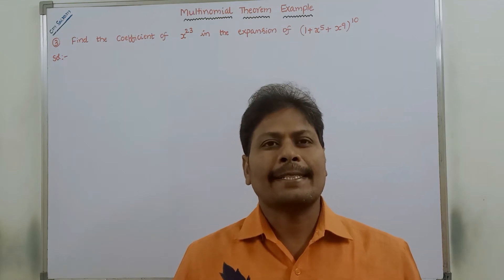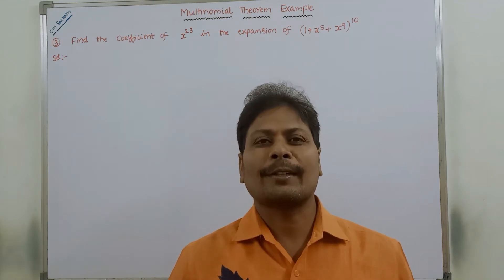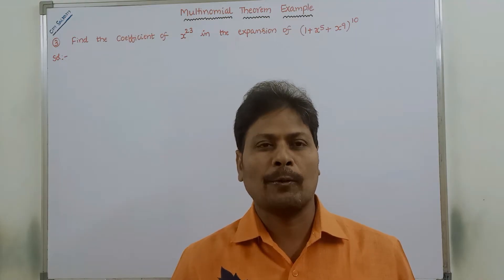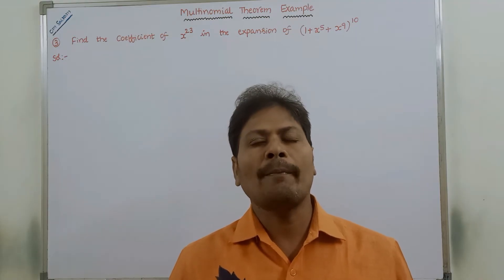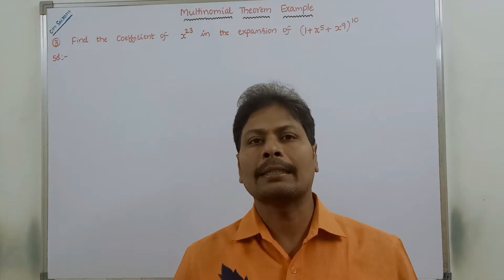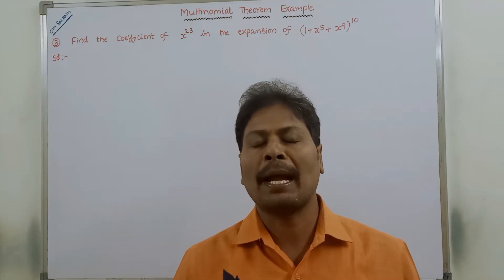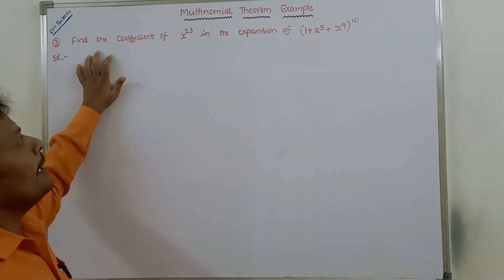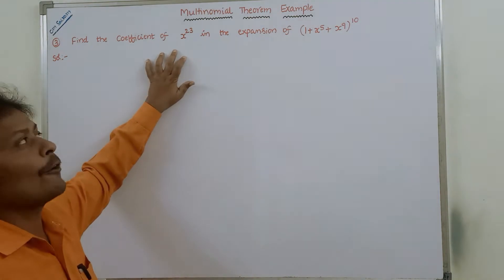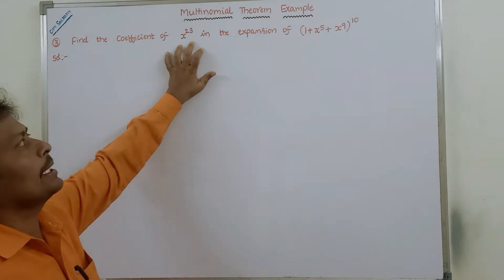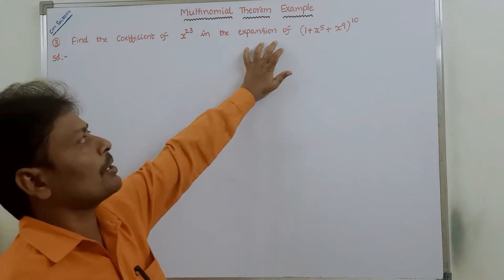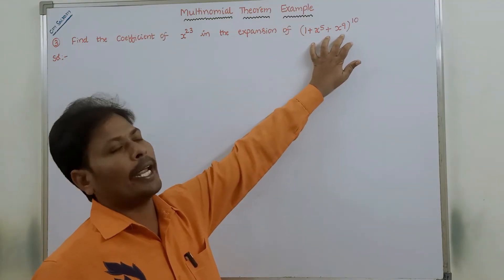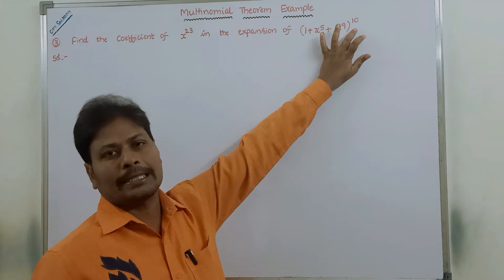Hi friends, welcome back to our YouTube channel. Today we have to discuss an example problem on the multinomial theorem in discrete mathematics. The given problem is: find the coefficient of x power 23 in the expansion of (1 plus x power 5 plus x power 9) whole power 10.